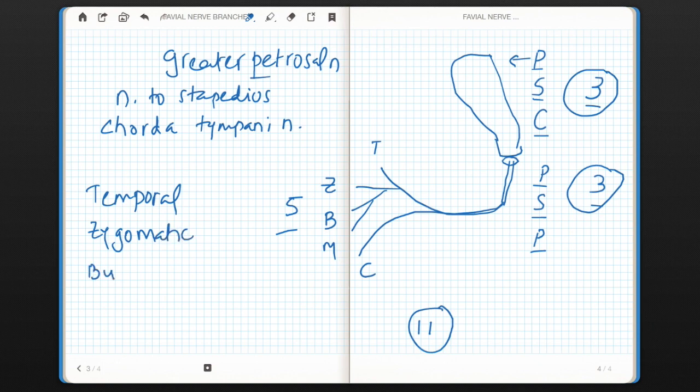B stands for buccal, again it will divide into upper and lower buccal. M stands for marginal mandibular. Always specify marginal mandibular, as mandibular nerve itself is one of the divisions of trigeminal nerve. So here this M stands for marginal mandibular.